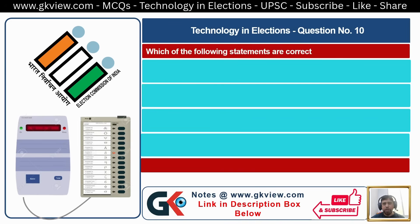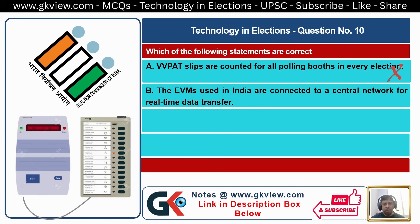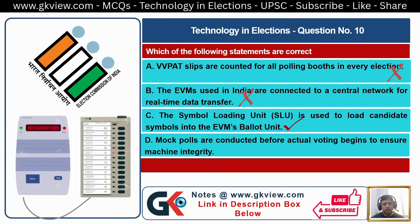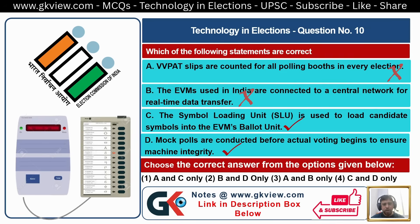Question Number 10. Which of the following statements are correct? A. VVPAT slips are counted for all polling booths in every election — this is wrong. B. EVMs used in India are connected to a central network for real-time data transfer — this is also wrong; they are connected only during counting. C. The Symbol Loading Unit (SLU) is used to load candidate symbols into the EVM's ballot unit — this is true. D. Mock polls are conducted before actual voting begins to ensure machine integrity — this is also true. C and D are correct; the answer is option 4: C and D only.